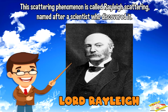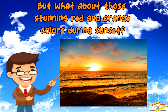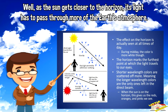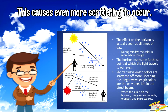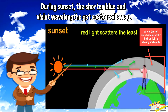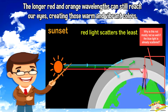But what about those stunning red and orange colors during sunset? As the Sun gets closer to the horizon, its light has to pass through more of Earth's atmosphere. This causes even more scattering to occur.